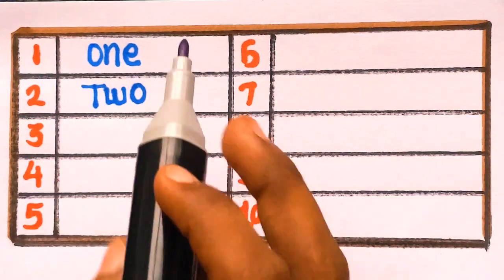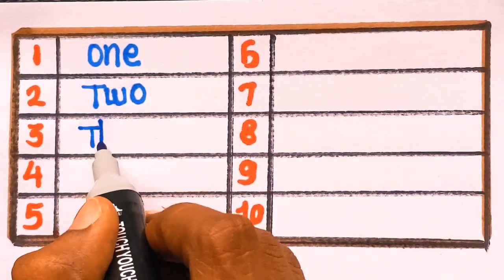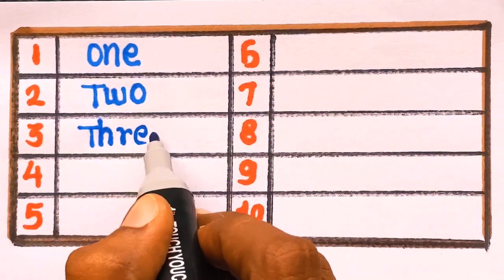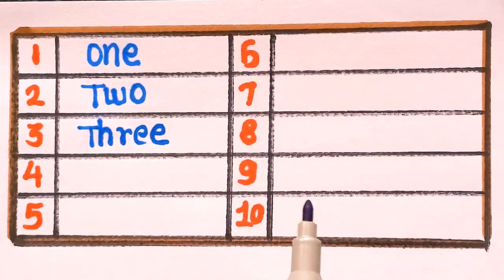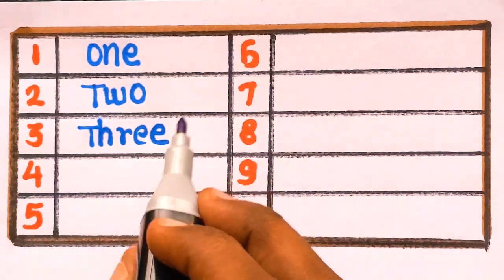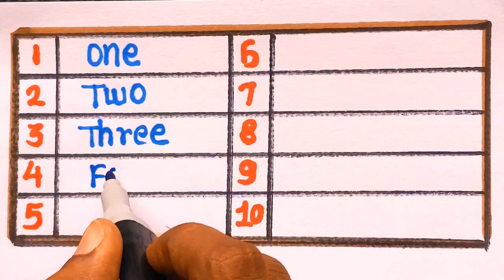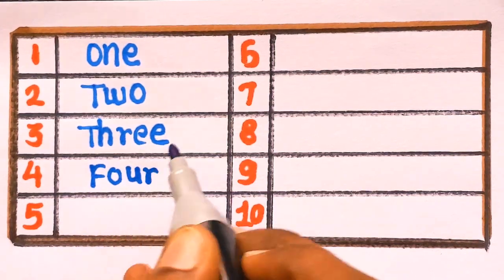Next is number 3. T-H-R-E-E. Three. After number 3, next number is number 4. F-O-U-R.